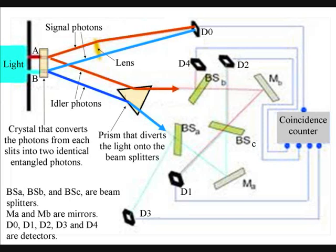So far, the experiment is similar to the conventional two-slit experiment. However, after the slit, a crystal converts the photons from each of the two slits into two twin or entangled photons.